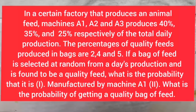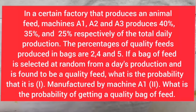Let's consider the second question of that same past question — MASS 206, 2021, River Stage University past question. The question says: in a certain factory that manufactures animal feed, machines A1, A2, and A3 produce 40%, 35%, and 25% respectively of the total daily production. The percentage of quality feeds produced in bags are 2%, 4%, and 5%. If a bag of feed is selected at random from a day's production and is found to be a quality feed, question one asks: what is the probability that it is manufactured by machine A1?